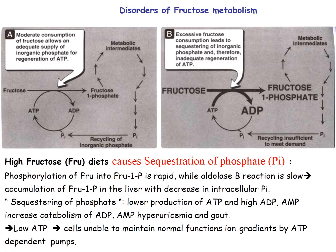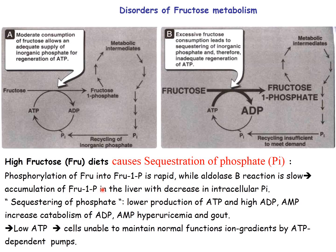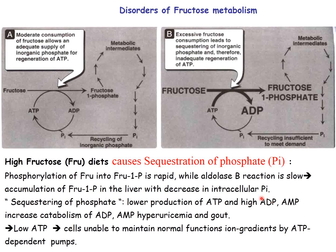High fructose intake causes sequestering of intracellular phosphate, because phosphorylation of fructose to fructose 1-phosphate is rapid while the aldolase B reaction is slow. The resulting decrease in intracellular phosphate lowers ATP production and raises ADP and AMP, increasing catabolism of AMP and leading to hyperuricemia and gout.